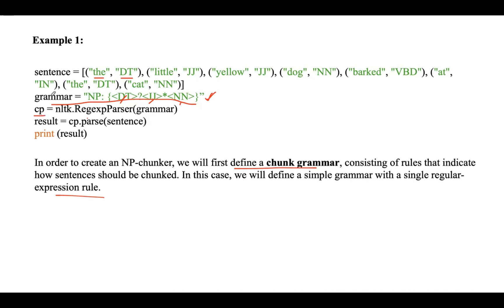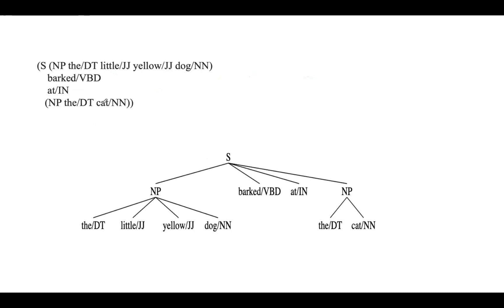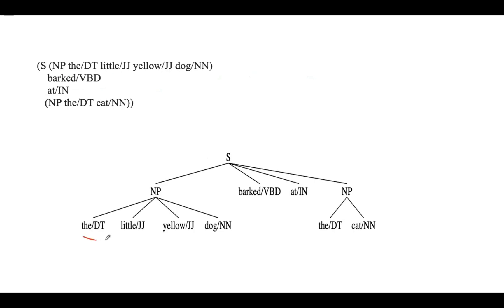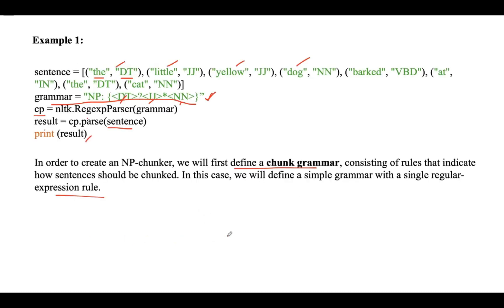We create the chunk parser by passing this grammar as a parameter to the Regex parser. You can then test it on the considered example sentence. Once you print the result, you will get output something like this. Looking at 'the little yellow dog': 'the' is a determiner, 'little' and 'yellow' are adjectives, and 'dog' is a noun — so all of them together come under a noun phrase and are considered as one chunk.